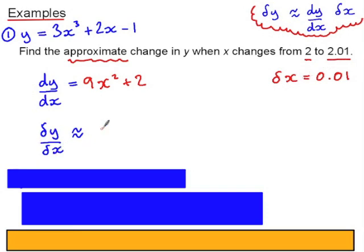delta y over delta x is going to be approximately equal to dy by dx. So I can use my small change formula, rearrange,